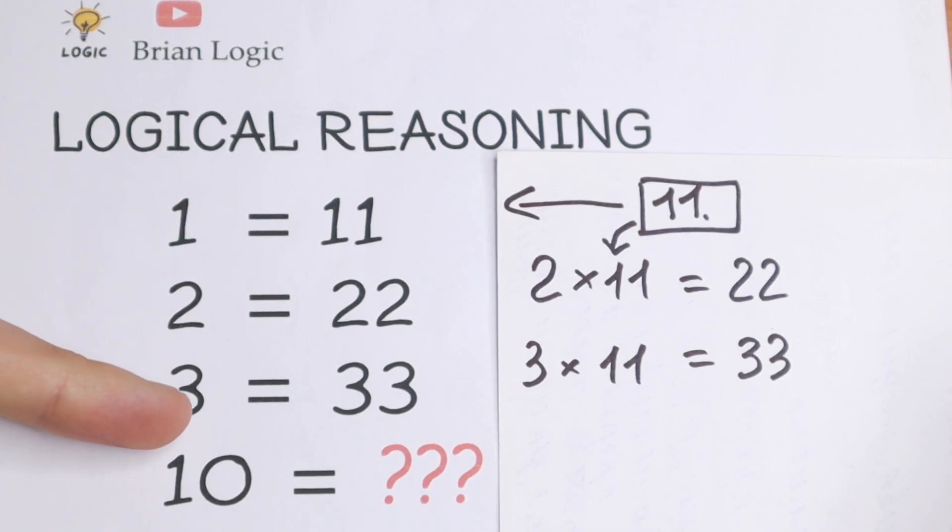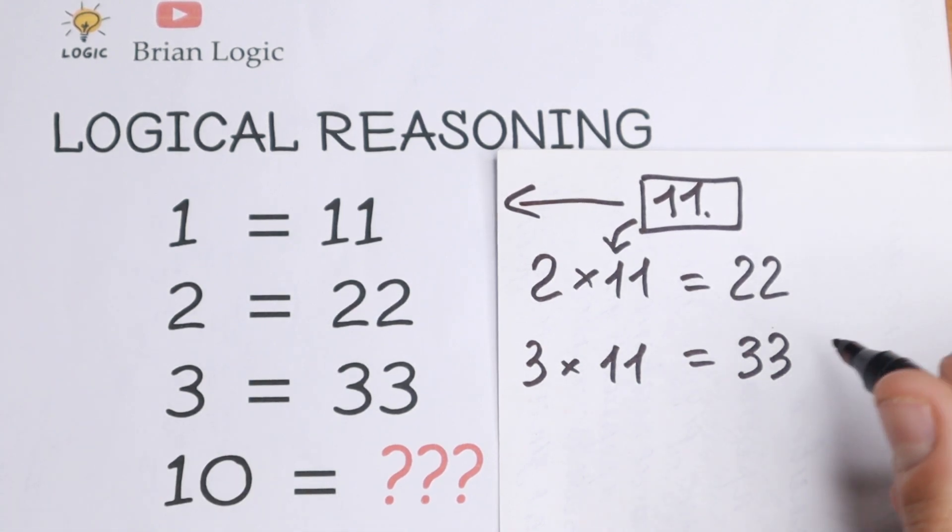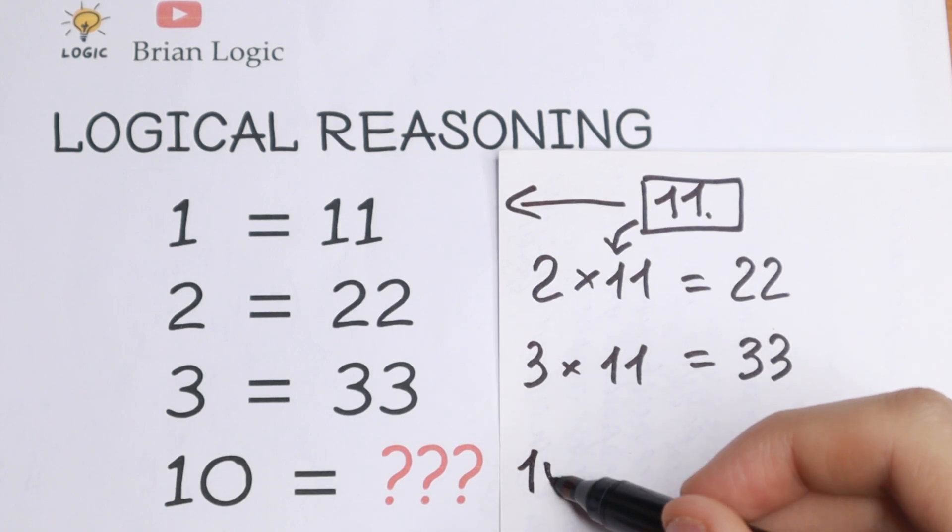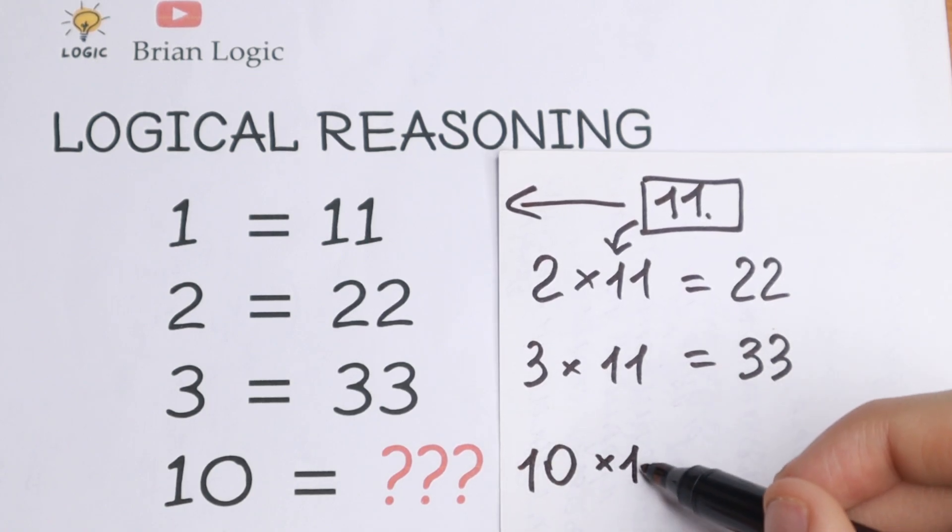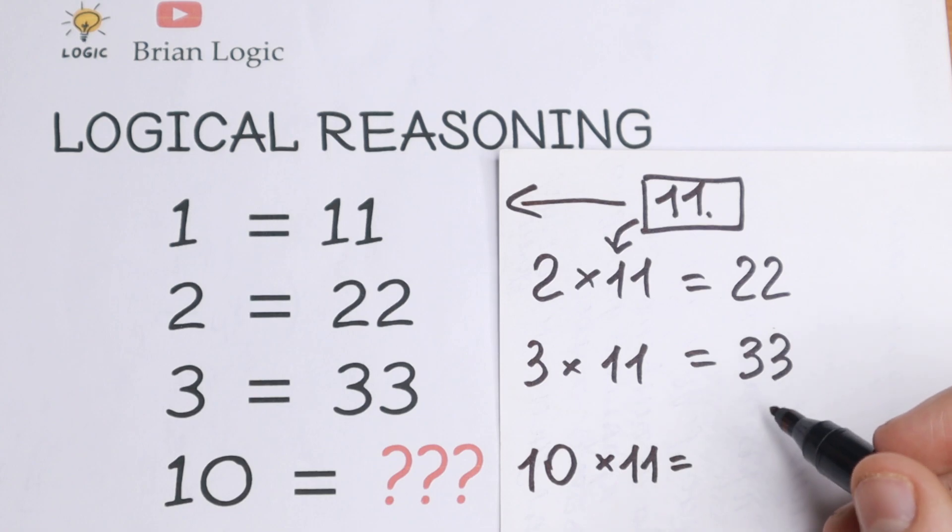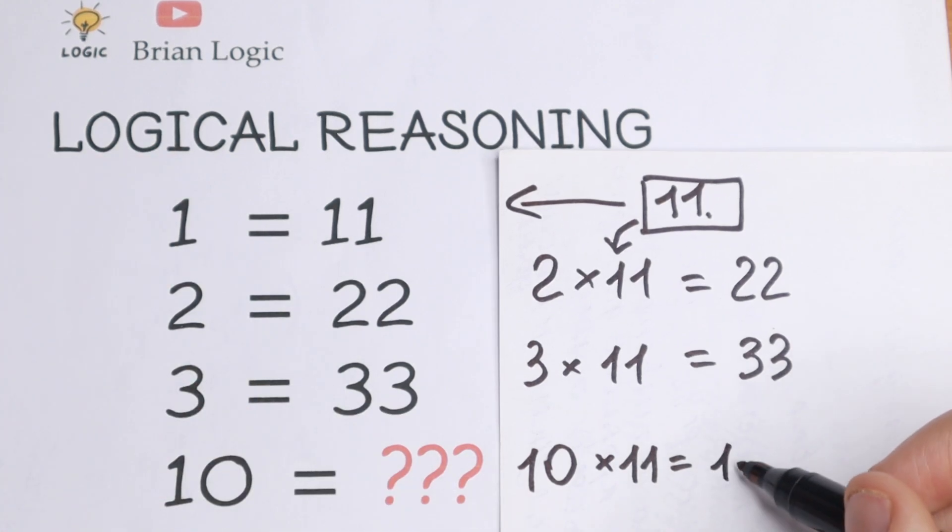It's not hard to see that between these we will have a lot of numbers, but for the last one, the number we need, we will have 10 times 11. And our answer will be 110.